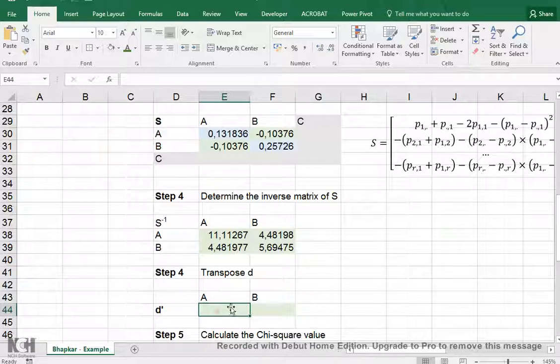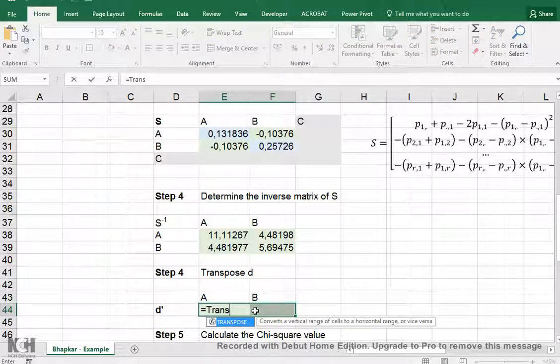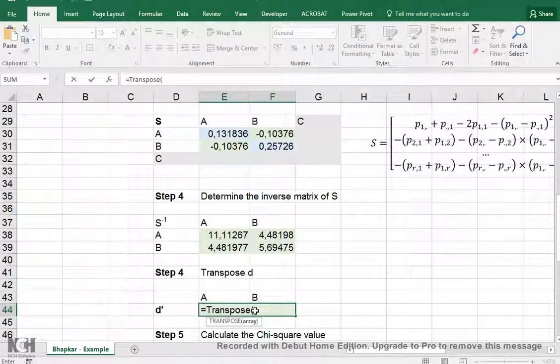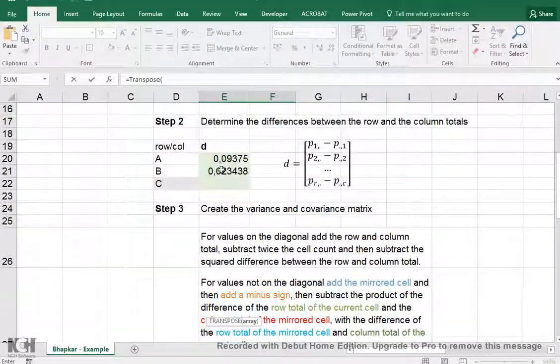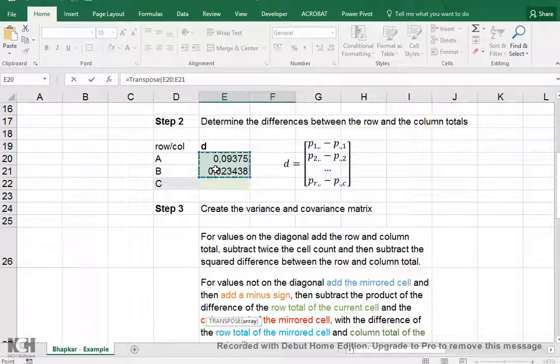and then this is quite important: press Ctrl-Shift and then Enter, because this is an array function. We also want to transpose the differences, so select the two cells and then say equals TRANSPOSE and my d was up here. Select those two and again, because this is an array function, Ctrl-Shift and then Enter.